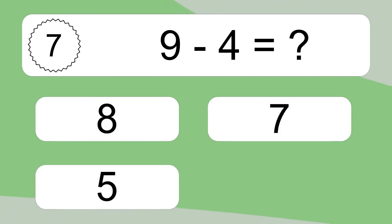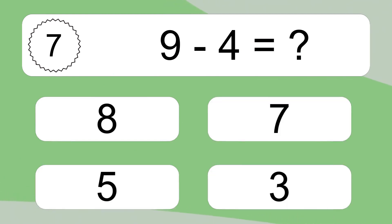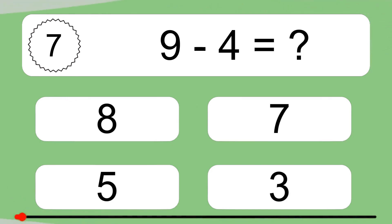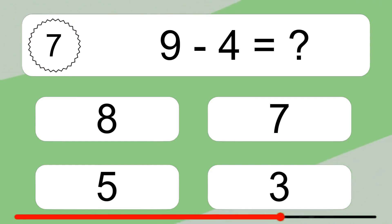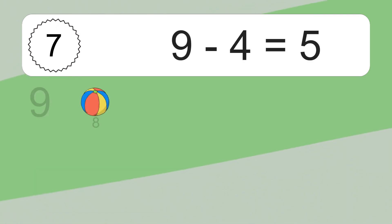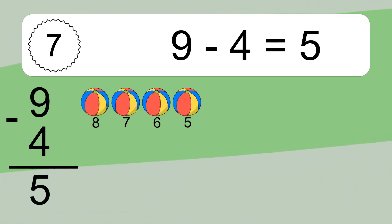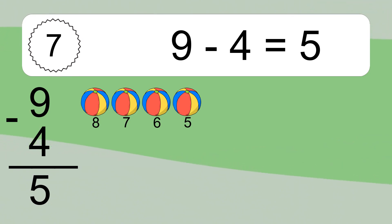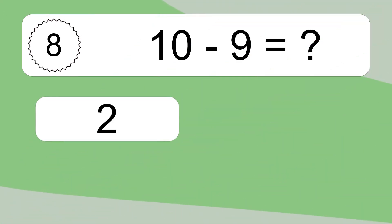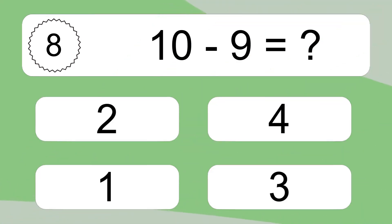9 minus 4 equals what? 9 minus 4 equals 5. Let's count it: 8, 7, 6, 5.